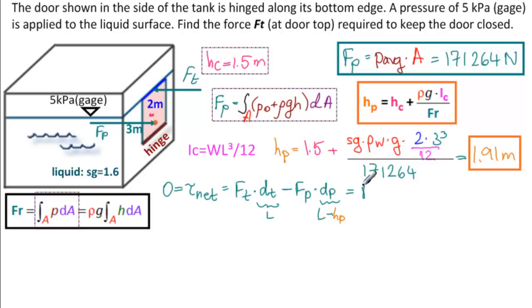Let's put our numbers in and calculate Ft. Ft times L is 3, minus Fp, 171,264, times 3 minus 1.91. So Ft equals 1 third of 171,264 times 1.09.